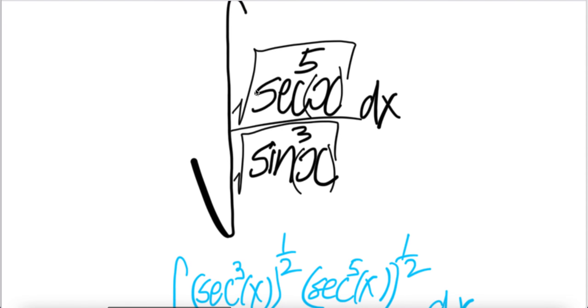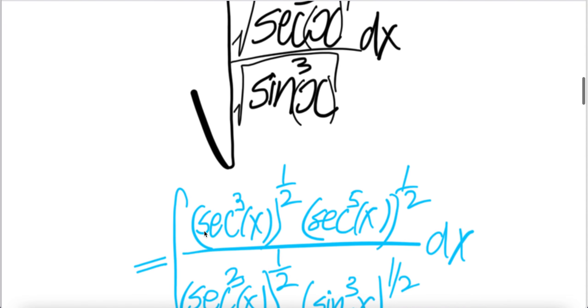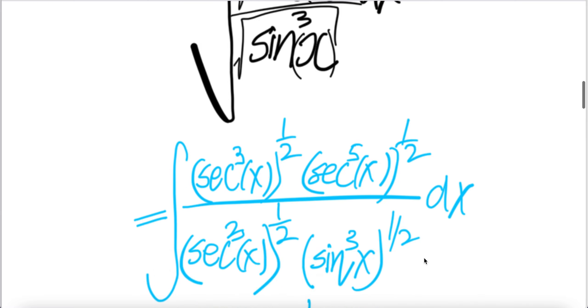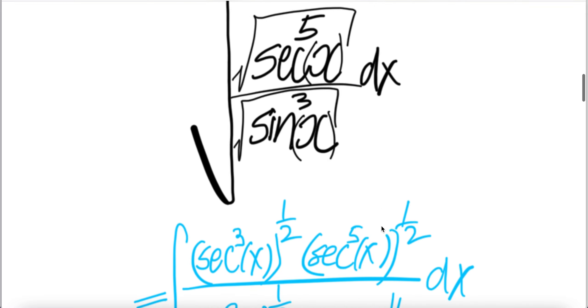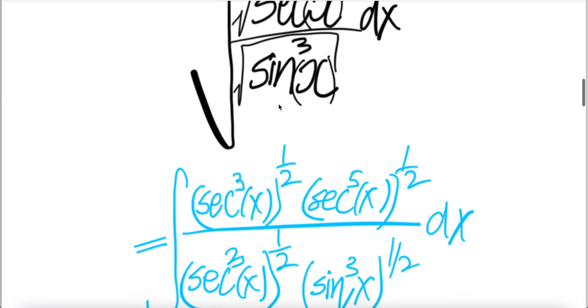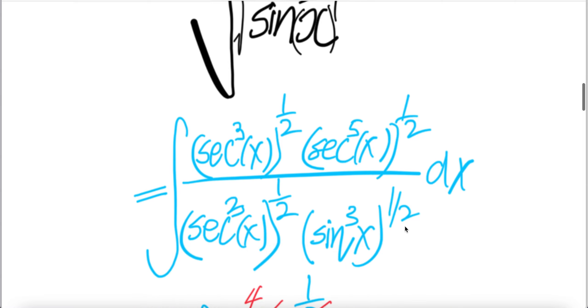Let us write, let us multiply top and bottom with sec x cubed to the power half, i.e. square root of sec x cubed. Upstairs and downstairs, and then everything here is the same, except we write this as sec x to power 5 to the power of half, and similarly downstairs, sin x cubed to the power of half.